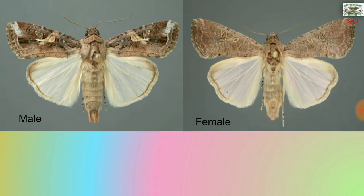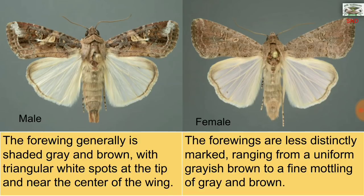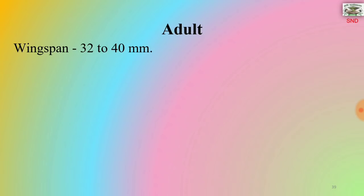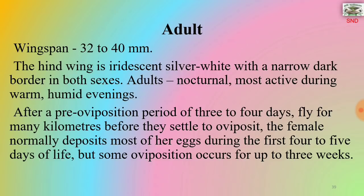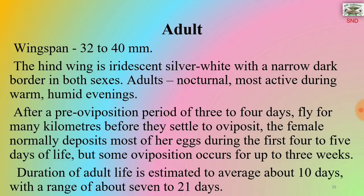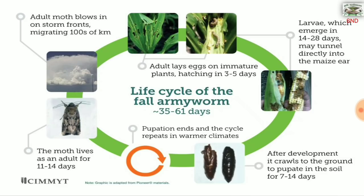The male and female adults are shown. The forewings are generally shaded gray and brown with triangular white spots at the tip and near the center of the wing. The forewings are less distinctly marked in females, ranging from a uniform grayish brown to a fine mottling of gray and brown. The adult's wingspan is 32-40 mm. The hind wing is iridescent silver-white with a narrow dark border in both sexes. Adults are nocturnal, most active during warm, humid evenings. After a pre-oviposition period of 3-4 days, they fly for many kilometers before settling to oviposit. Females normally deposit most eggs during the first 4-5 days of life, but some oviposition occurs for up to 3 weeks. Adult life averages about 10 days, ranging 7-21 days. The total life cycle of fall army worm is 35-61 days.